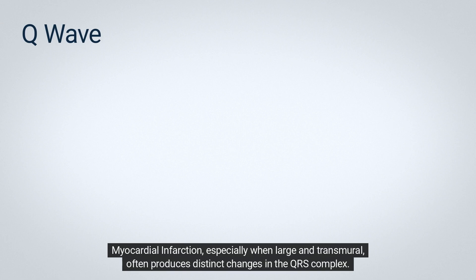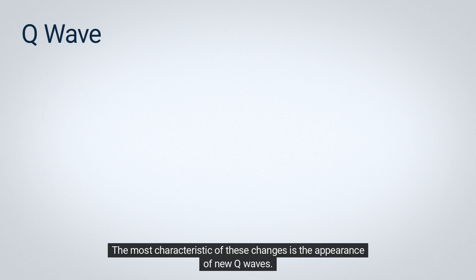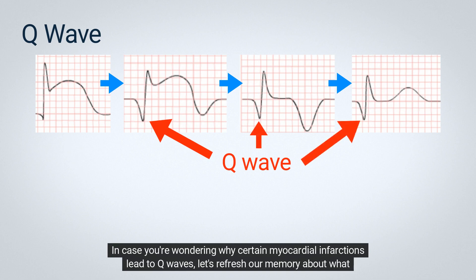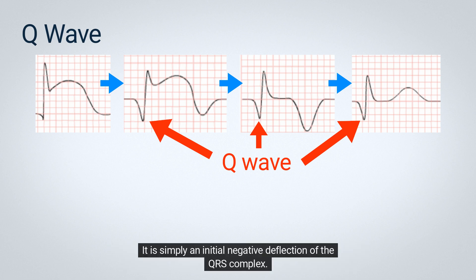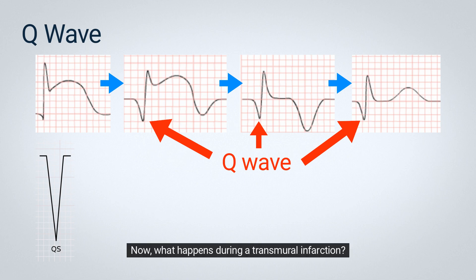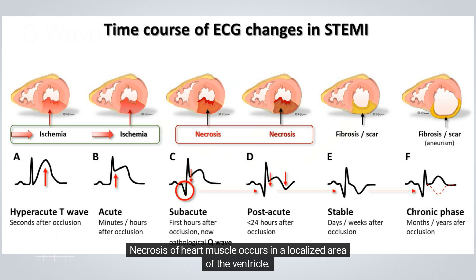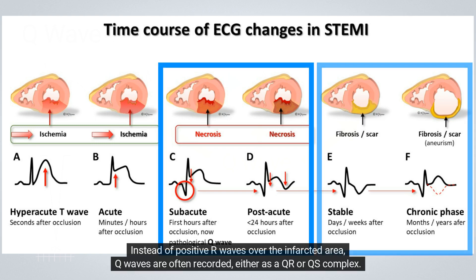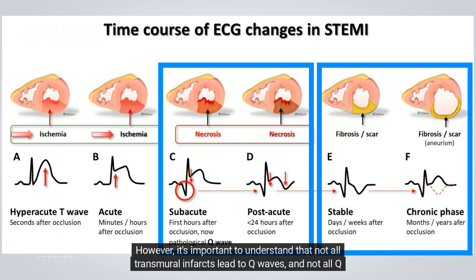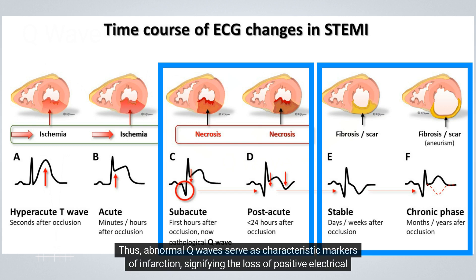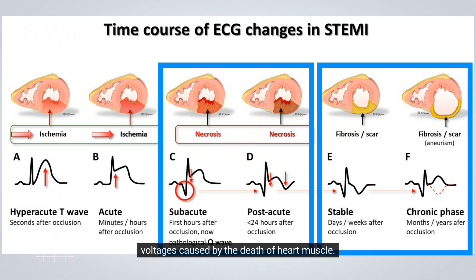Myocardial infarction, especially when large and transmural, often produces distinct changes in the QRS complex. The most characteristic of these changes is the appearance of new Q-waves. A Q-wave is simply an initial negative deflection of the QRS complex. If the entire QRS complex is negative, it is referred to as a QS complex. During a transmural infarction, necrosis of heart muscle occurs in a localized area of the ventricle, causing the electrical voltages produced by this portion of the myocardium to disappear. Instead of positive R-waves over the infarcted area, Q-waves are often recorded, either as a QR or QS complex. However, not all transmural infarcts lead to Q-waves, and not all Q-wave infarcts correlate with transmural necrosis. Abnormal Q-waves thus serve as characteristic markers of infarction, signifying the loss of positive electrical voltages caused by the death of heart muscle.